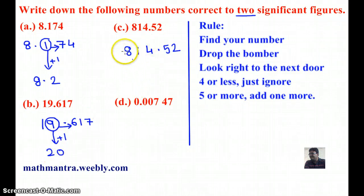Let's look at example C, 0.81452. Here, the third significant figure is 4, and the next door number is 5.